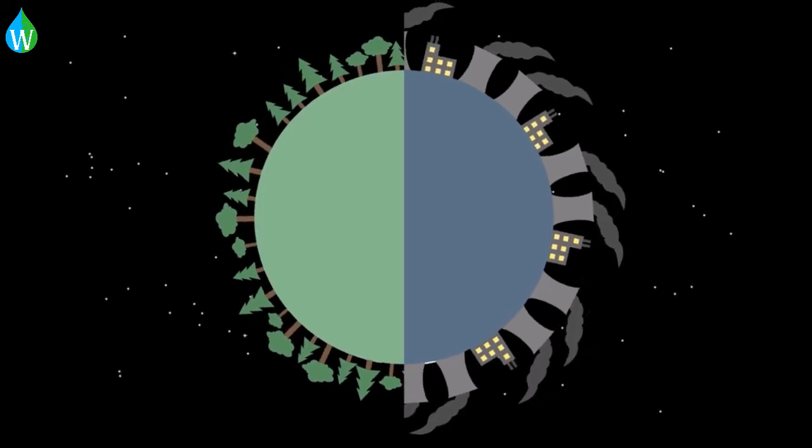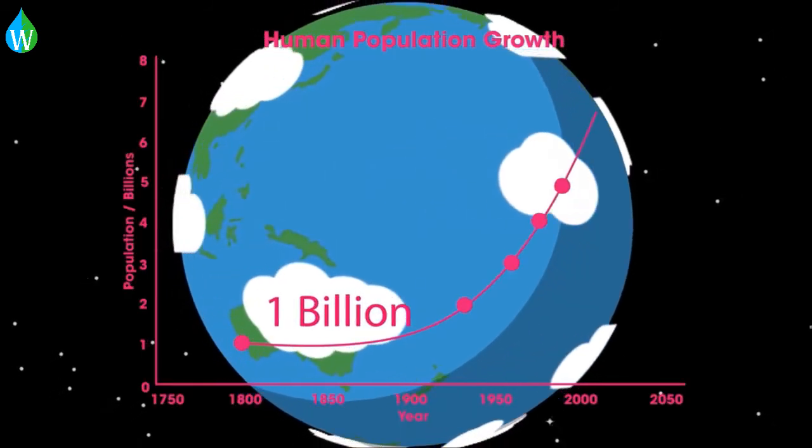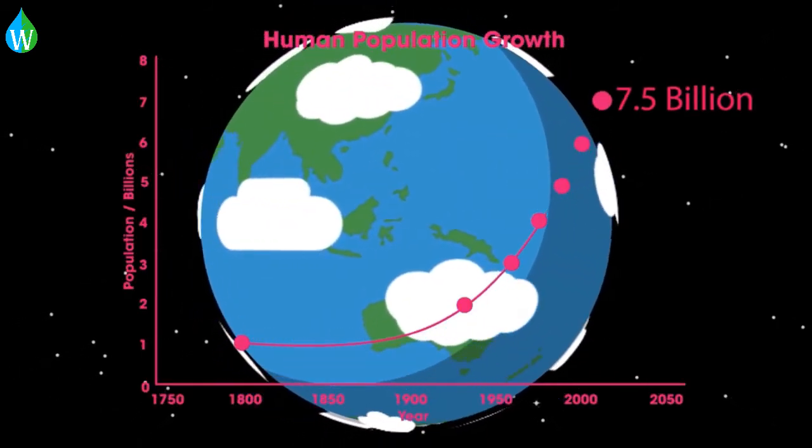So there you have organic farming. Whilst great in theory, is it practical? Can it sustain the 7.5 billion people living today?